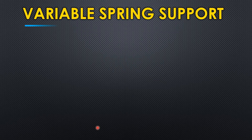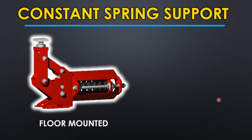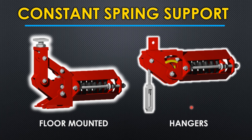Now let's understand the types of spring supports. We have two common types: variable and constant. In variable, there are two sub-types: can type and hanger type. Both have a similar working principle but differ in mounting — one is upright and the other is inverted. In constant springs, there are also two types: floor mounted and hanger. Constant spring working is entirely different from the variable spring.